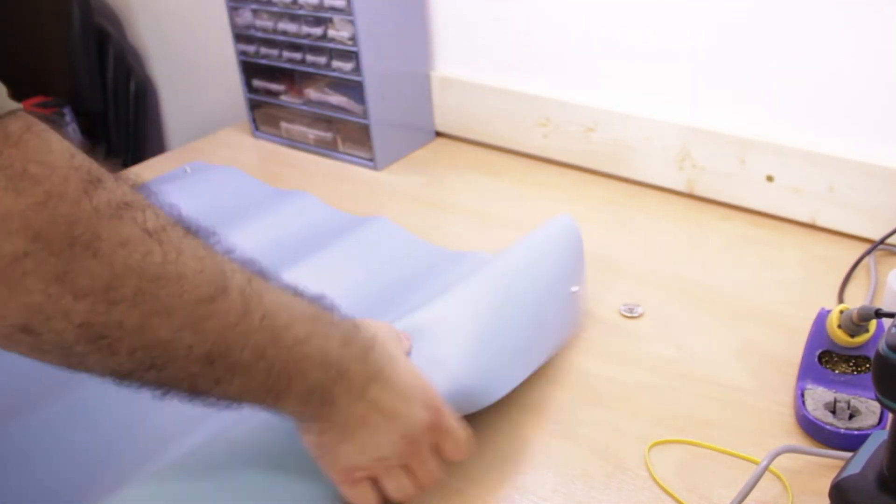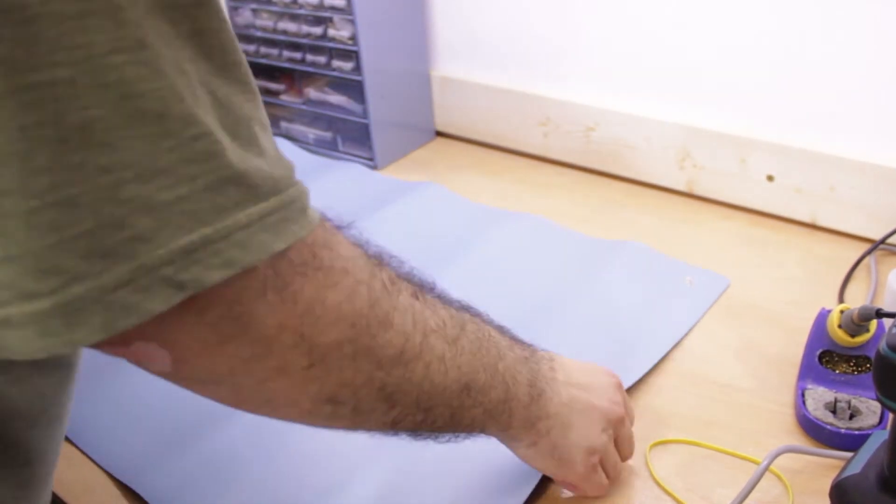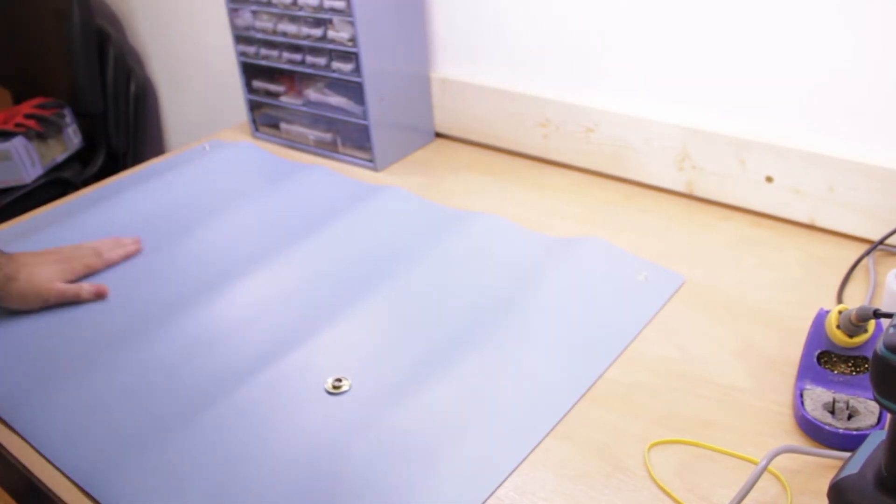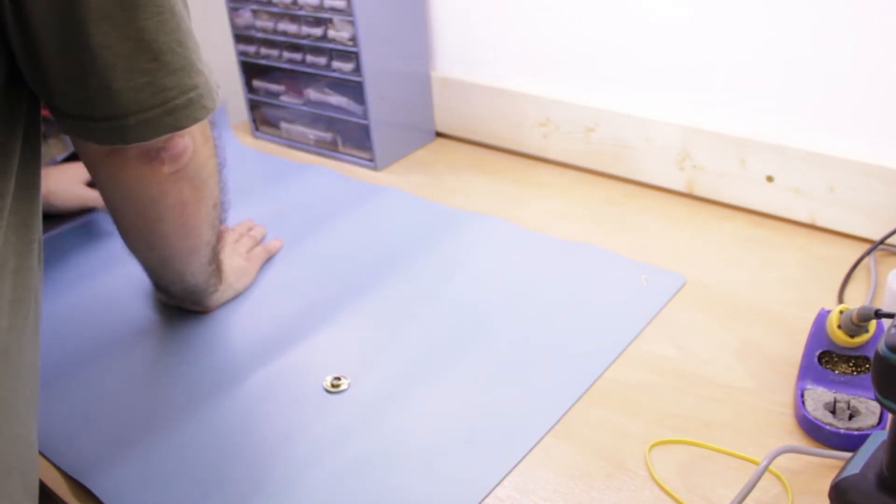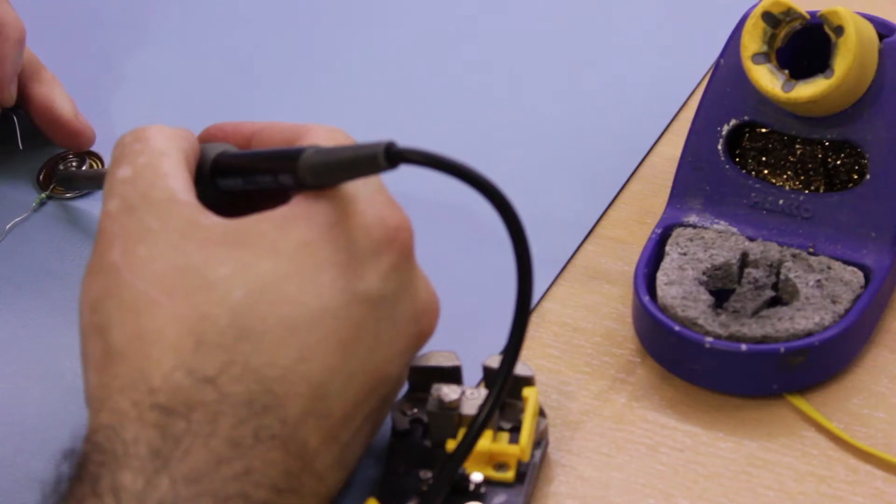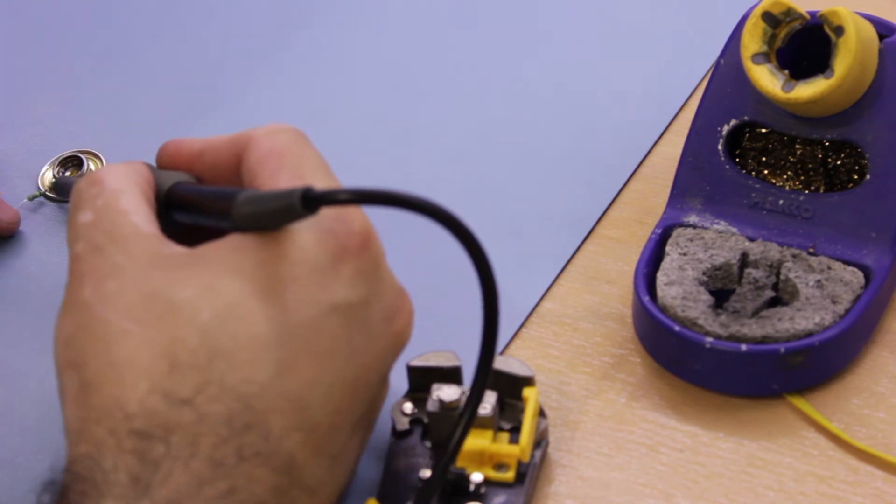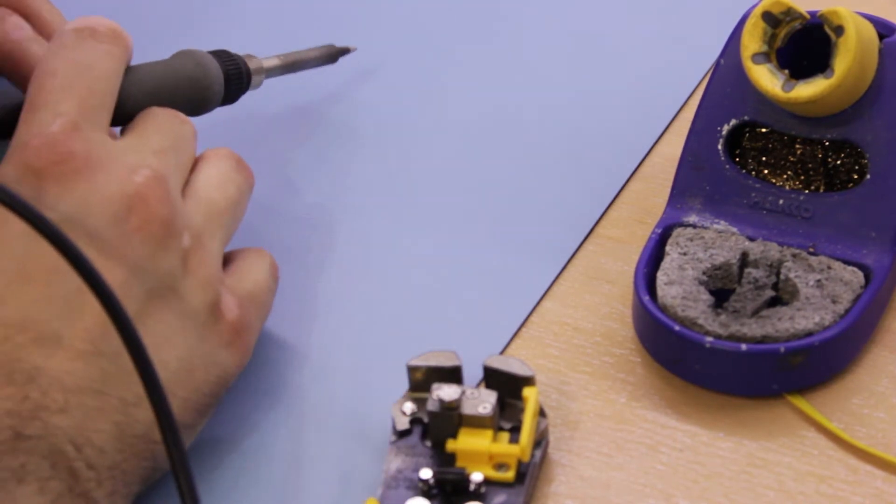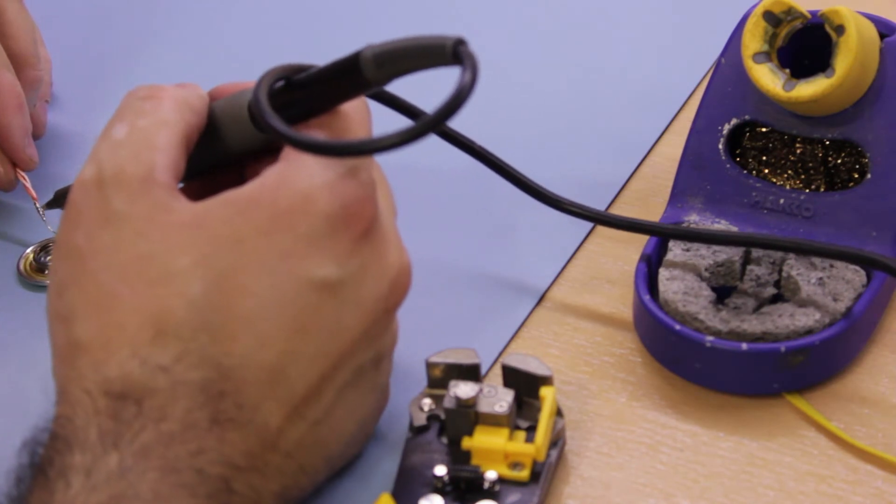I unpack and roll out my anti-static ESD protection mat. To the included female press stud, I solder and heat shrink a 1M ohm resistor, and to it I solder a lengthy wire.